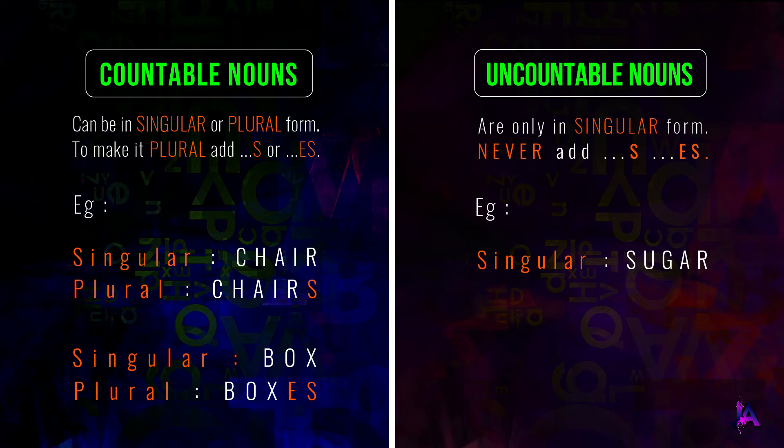Never add s or es to uncountable nouns. For example, sugar and furniture — we don't say sugars or furnitures.